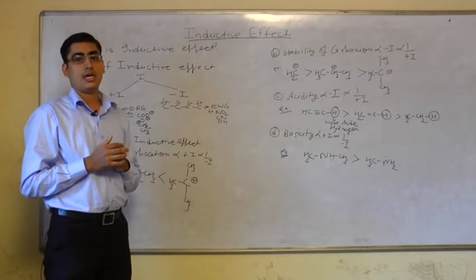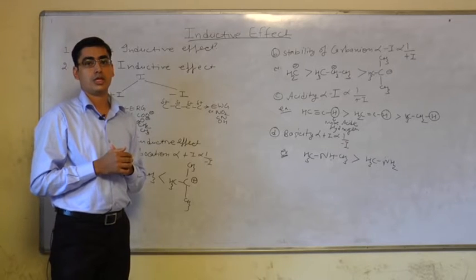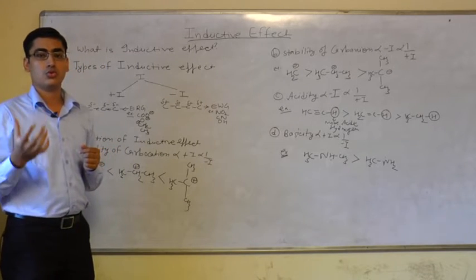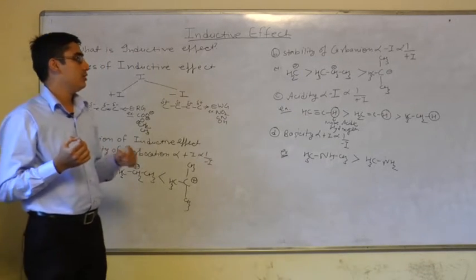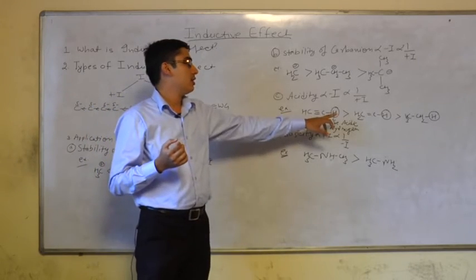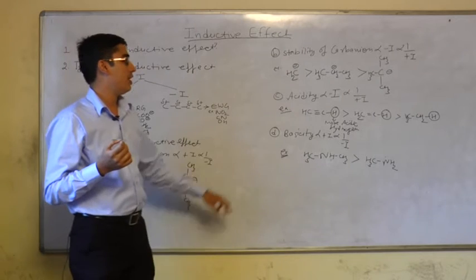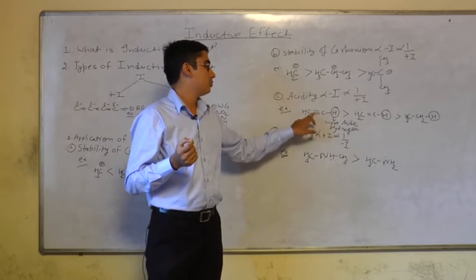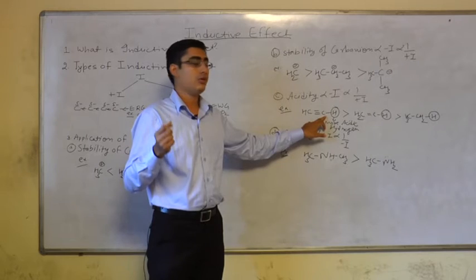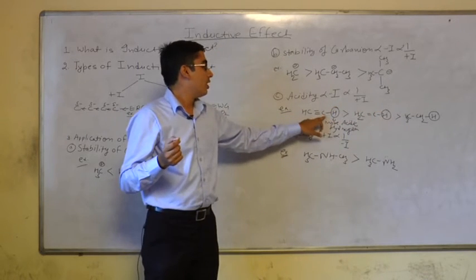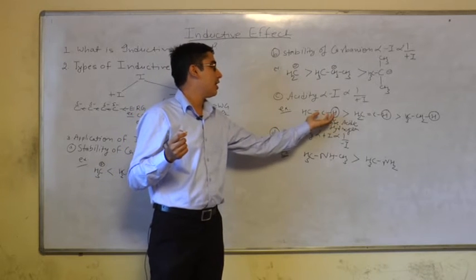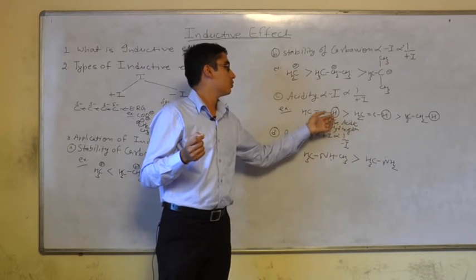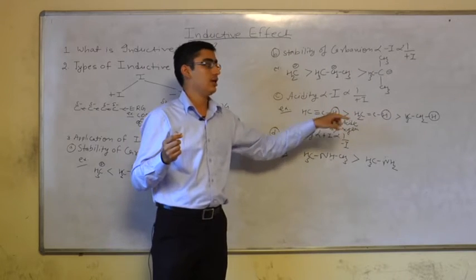Acidity is proportional to minus I effect and inversely proportional to plus I effect. In acidity, the acid will lose H plus in the solution. Alkynes are more acidic than alkenes, which are more acidic than alkanes. The reason is that the sp carbon in alkynes is more electronegative than sp2 carbon in alkenes, which is more electronegative than sp3 carbon in alkanes. So sp carbon attracts the bonding pair of electrons towards itself and loses H plus in the solution, making alkynes more acidic.